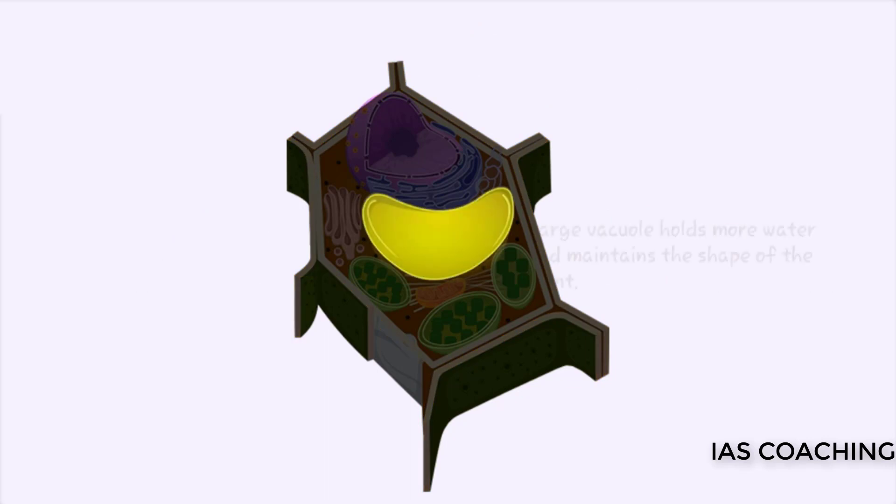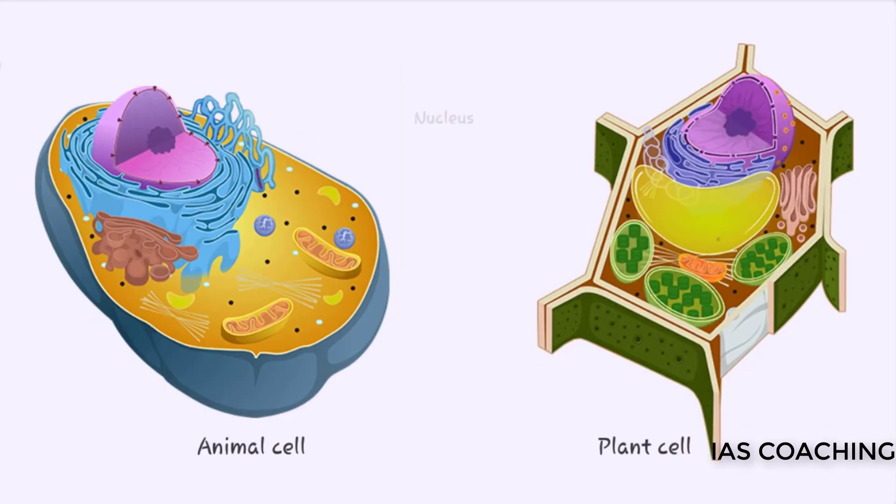Similarly, plant cells have a large vacuole due to the amount of water the cell must hold to maintain its shape, otherwise the plant would wilt and die. One of the most important organelles common to both cells is the nucleus.